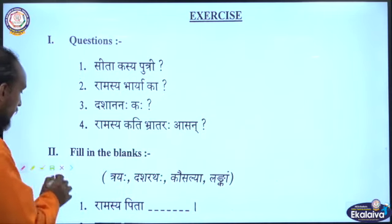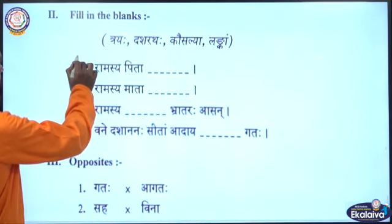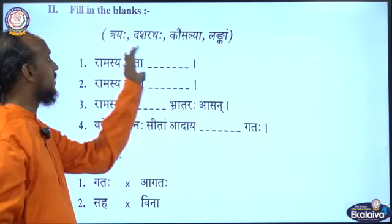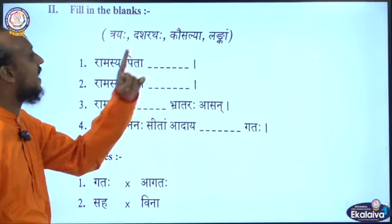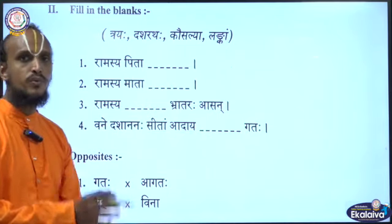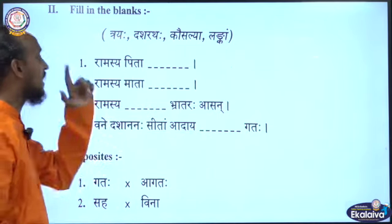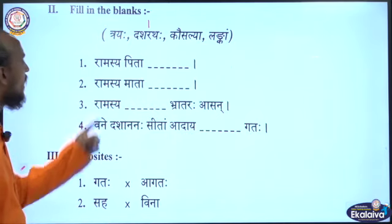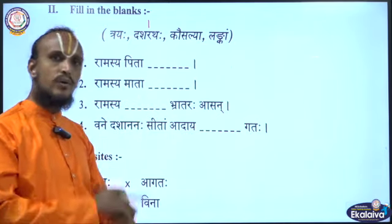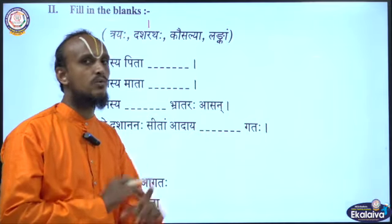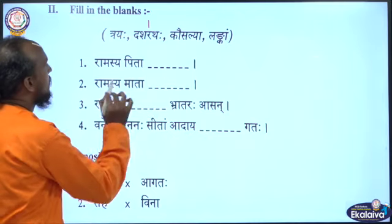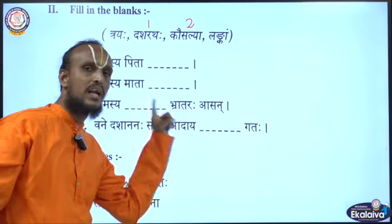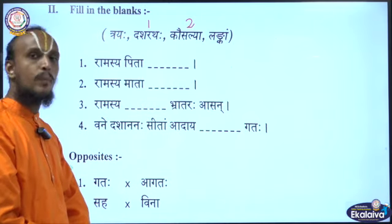Now fill in the blanks. The first one: Ramasya Pita Dash — the options are Trayaha, Dasharatha, Kausalya, Langkam. You choose Dasharatha. So: Ramasya Pita Dasharatha. Then Ramasya Mata Dash — who is the mother of Lord Rama? Kausalya. So: Ramasya Mata Kausalya. Then Ramasya Dash Bharataraha Asana — how many brothers did Rama have? Three brothers.